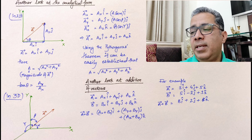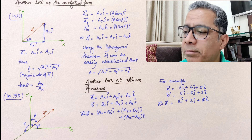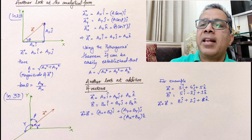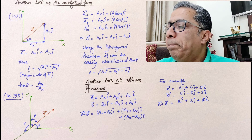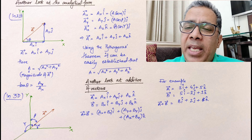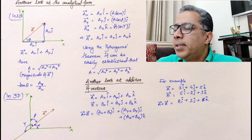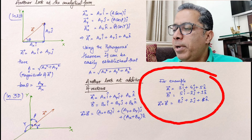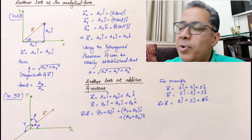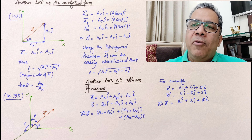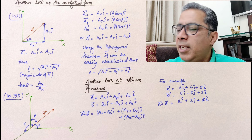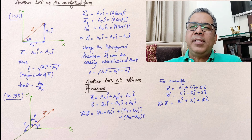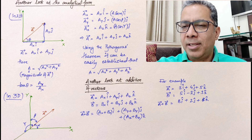When your vectors are given to you in analytical form, addition is very, very simple. You can see an example right underneath me. Given vector A and vector B in analytical form, when we add them up, the X components are simply added algebraically to give the X component of the resultant, Y components are added algebraically to give the Y component, and the Z components are added algebraically to give the Z component of the resultant. It's a brilliant, very simple process for adding up vectors.